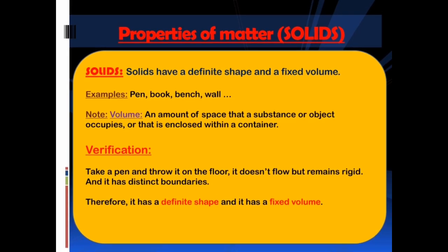Now we shall discuss properties of matter — solids. Solids have a definite shape and a fixed volume. Examples: pen, book, bench, wall. Note: volume is the amount of space that a substance or object occupies or that is enclosed within a container. Verification: take a pen and throw it on the floor — it doesn't flow but remains rigid and has distinct boundaries. Therefore, it has a definite shape and a fixed volume.